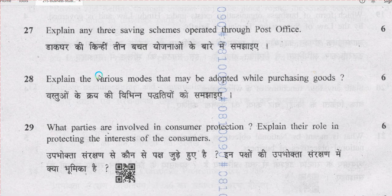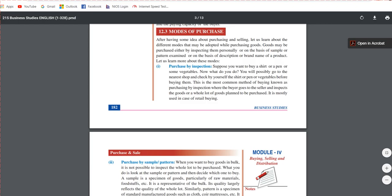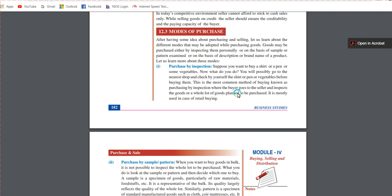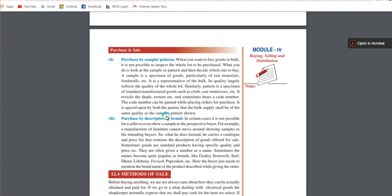Question number 28: explain the various modes that may be adopted while purchasing goods. From chapter 12 on purchasing and selling, there are three modes: first, purchase by inspection; second, purchase by sample or pattern; and third, purchase by description or brand. You have to write their names and explain them in detail since it is of six marks. Refer to page number 182, chapter 12.